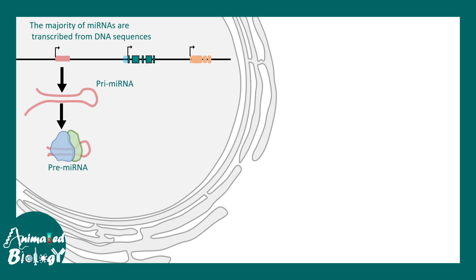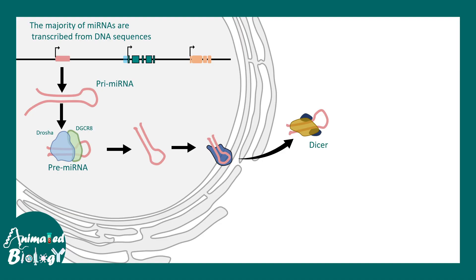The pre-microRNA would assemble with specific proteins known as DGCR8 and Drosha. Then the pre-microRNA gets converted into the subsequent form. But before that, the pre-microRNA has to be transported outside the nucleus. It would then be combined with a complex known as DICER and Argonaute proteins. With the DICER and Argonaute complex, it would be trimmed to produce exactly the mature microRNA structure.